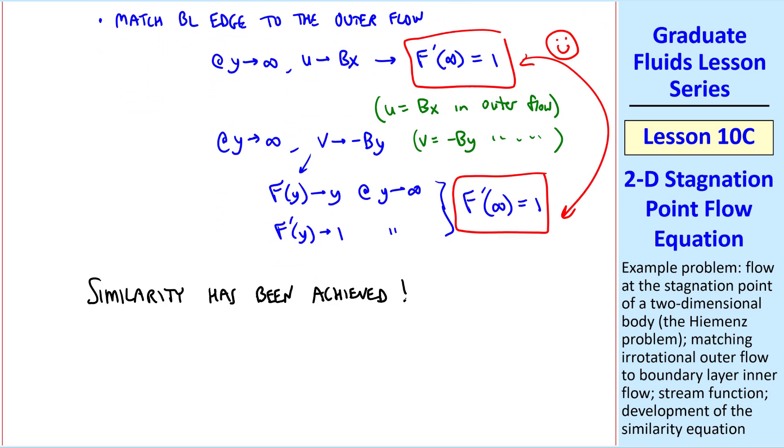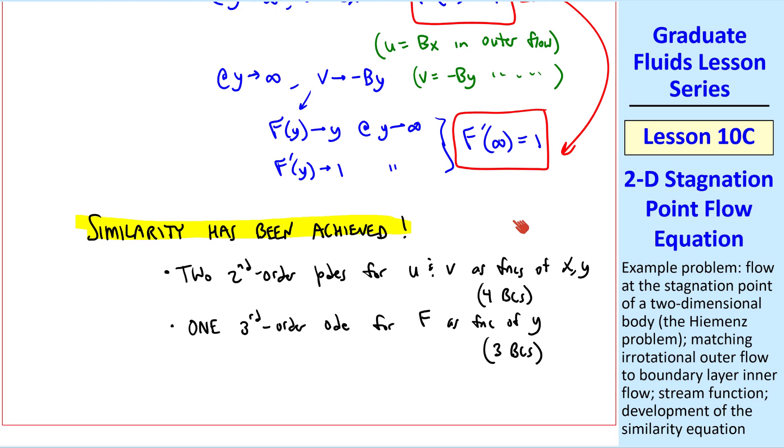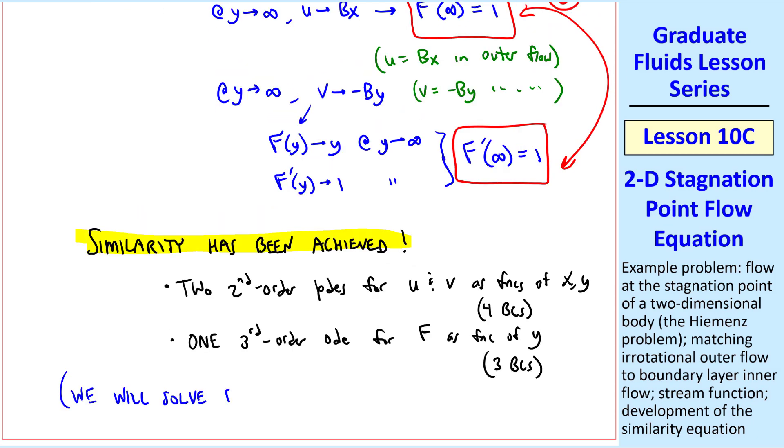So finally, similarity has been achieved. We went from two second order PDEs for u and v as functions of x and y, where we needed four boundary conditions, to one third order ODE for f as a function of y, where we need three boundary conditions, thus similarity has been achieved, and we will solve our similarity equation, equation seven, with its three boundary conditions in the next lesson.